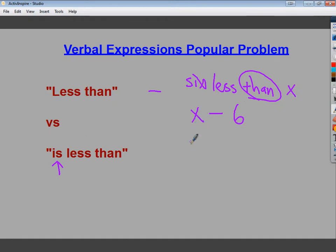So that's what 6 less than x looks like. Unfortunately, we have the is less than that says exactly the same thing, except the is is there and it changes everything. Once you start adding is, and we often think of is as an equal word, like 6 plus 5 is 11, so we tend to use that.